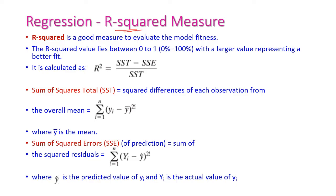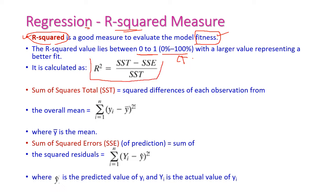R-squared measure is a very good measure used to evaluate the regression model. It is used to evaluate the model fitness, and the value lies between 0 to 1, that is 0% to 100%. The formula for R-squared is: R² = (SST − SSE) / SST. SST means sum of squared total and SSE means sum of squared error.